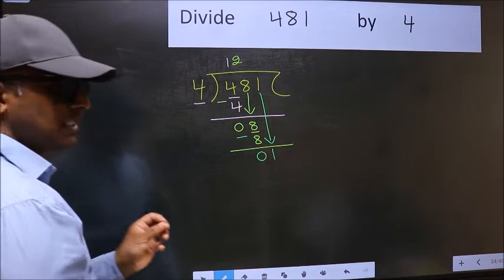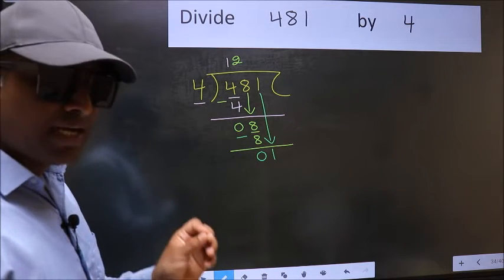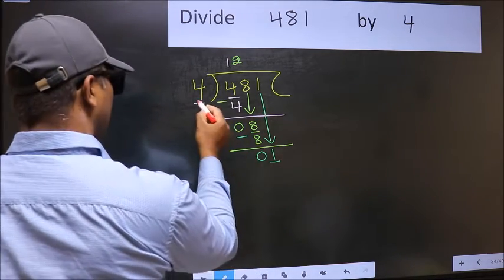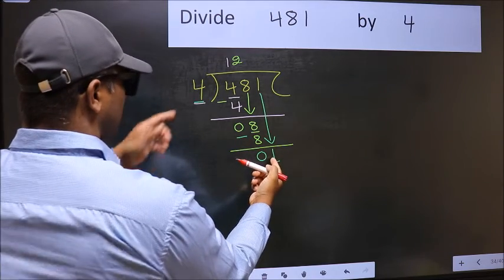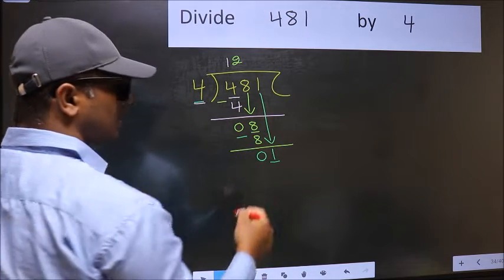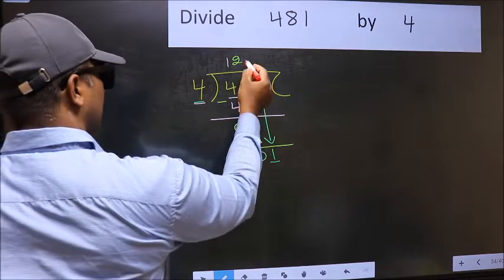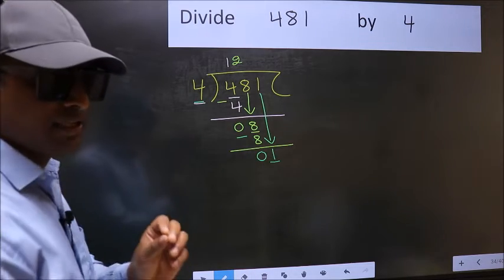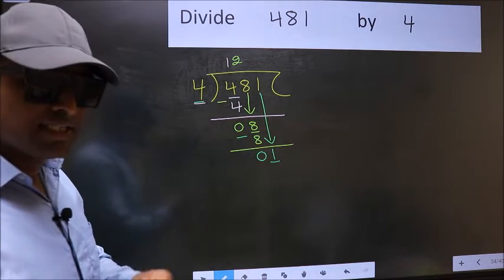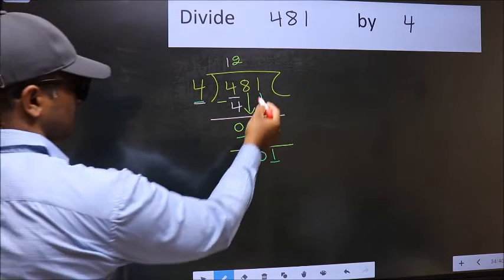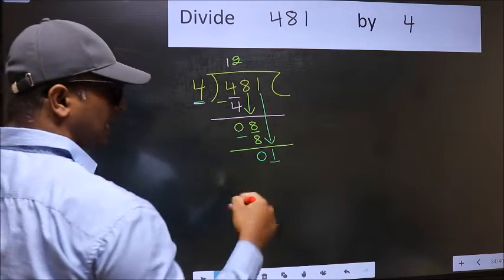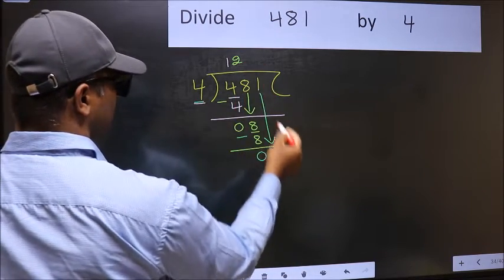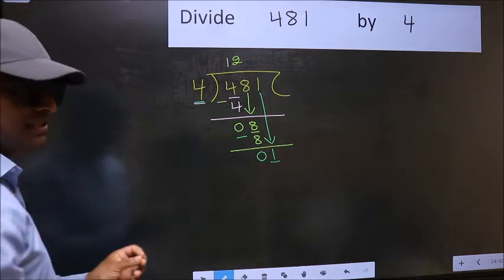After this step, the mistake happens. And the mistake is this: here we have 1 and here 4. Since 1 is smaller than 4, what many do is they directly put a dot and take 0 — which is wrong. Why is it wrong? Because just now you brought this number down, and in the same step you want to put a dot and take 0, which is wrong.